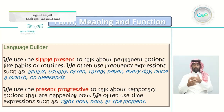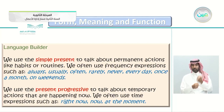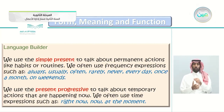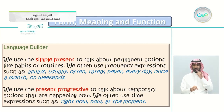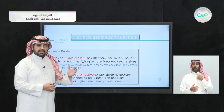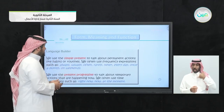Language builder: we use the simple present to talk about permanent actions like habits or routines. We often use frequency expressions such as: always, usually, often, rarely, never, every day, once a month, on weekends. We also use the present progressive to talk about temporary actions happening now, often with time expressions like 'right now,' 'now,' or 'at the moment' — for example, 'I'm talking on the phone right now.'